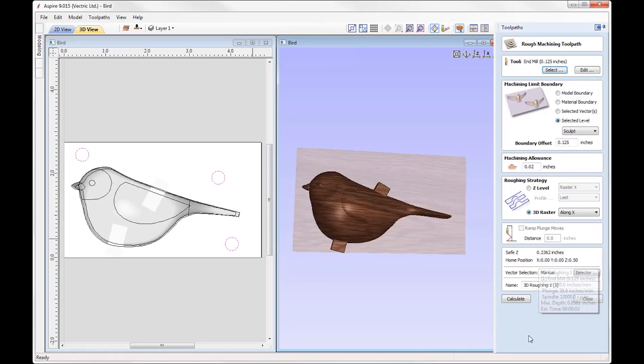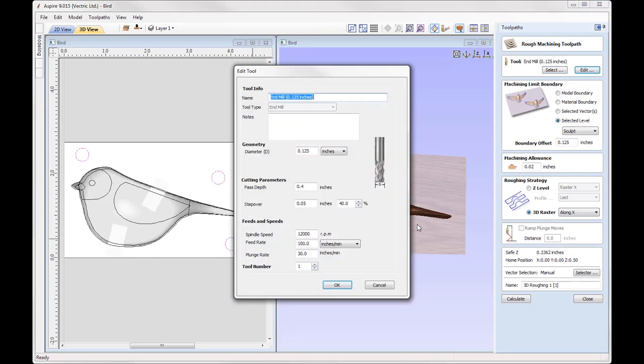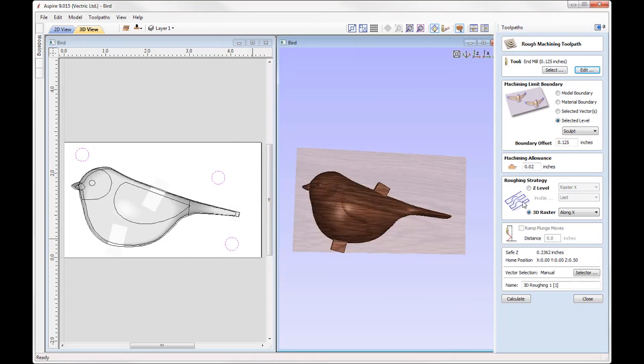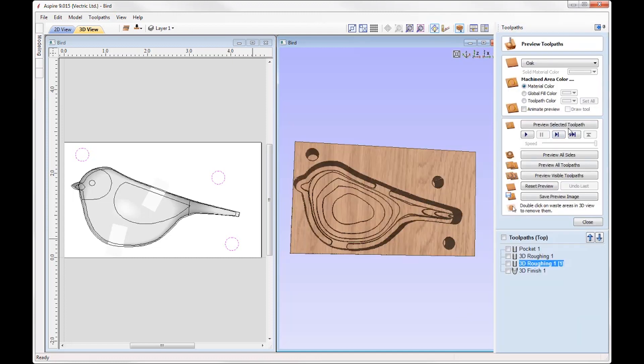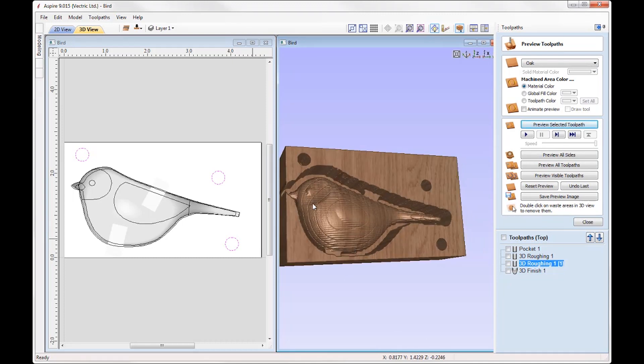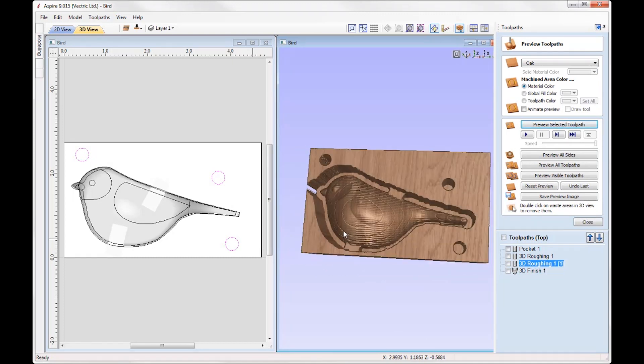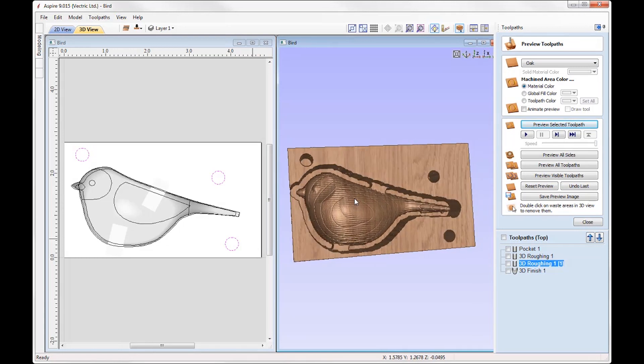Then we have another 3D roughing toolpath. So pretty much the same settings except this time we are applying a 3D raster along the X axis. If we take a look at the tool in here, this time we've got a pass depth of 0.4, so we've pretty much cut away the majority of the material. We're just getting a little bit closer here. And doing it as a 3D raster is going to allow us to really get as close as we can. So if we preview how that looks you can see how that's going to look when we come to cut that out. And so that just leaves a little bit of material left for a 3D finish.